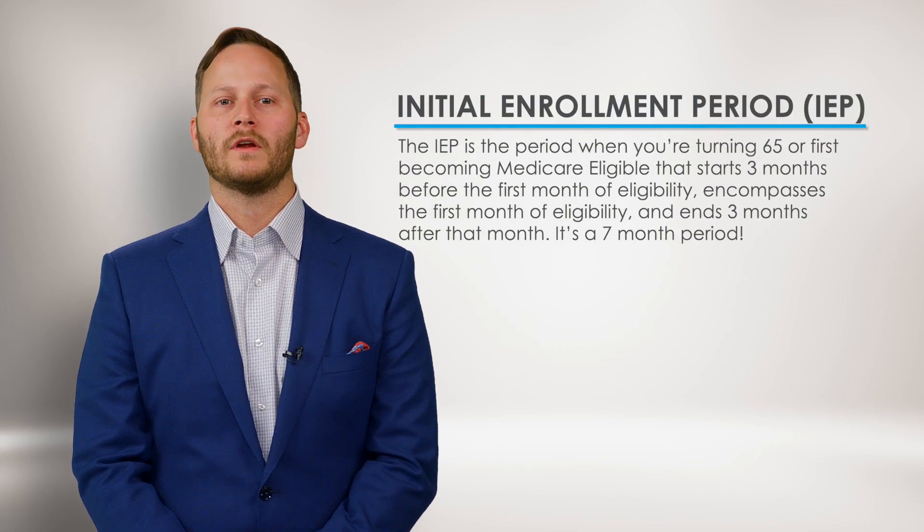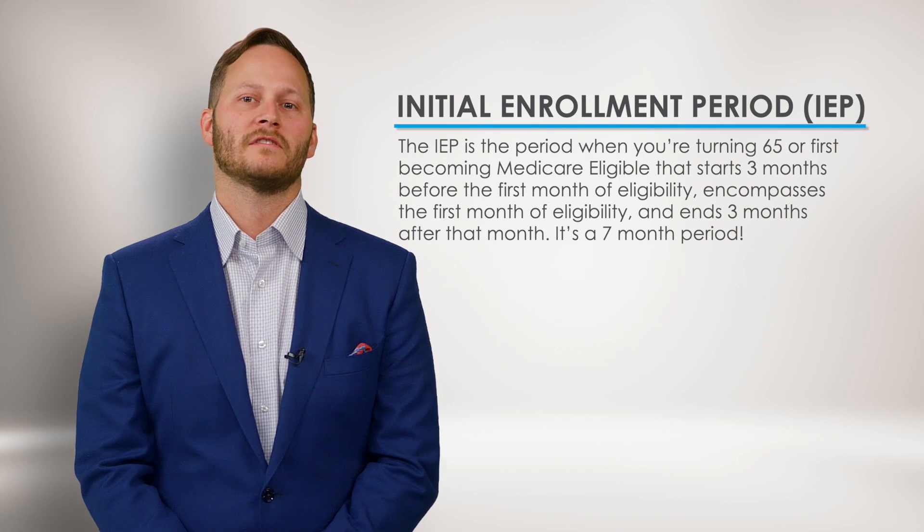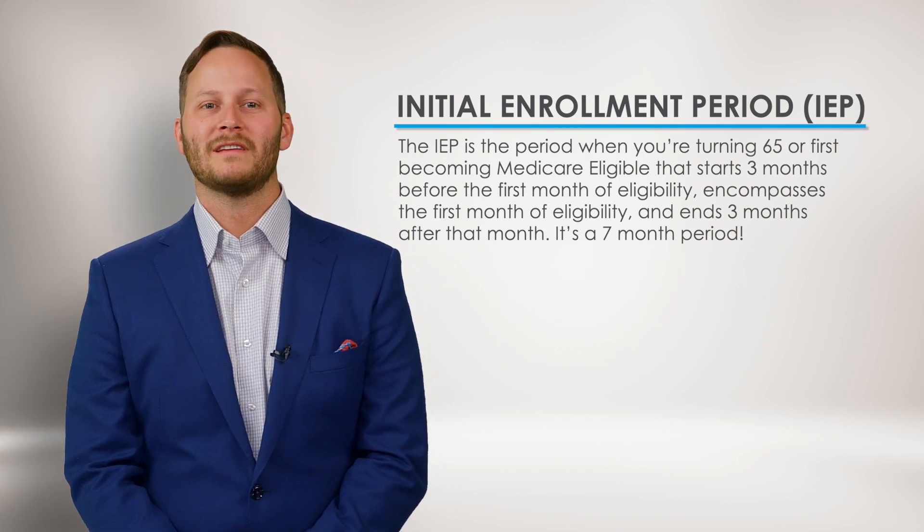The initial enrollment period is the period when you're turning 65 or first becoming Medicare eligible. It starts three months before the first month of eligibility, encompasses that first month, and ends three months after — making it a seven-month period. During this period, you can pretty much do anything. It normally overlaps your Medigap open enrollment period, so you can get Medigap plans, Medicare Advantage plans, Part D prescription drug plans, etc. This is a good time to get set up the right way so you don't have to use as many of the other periods.